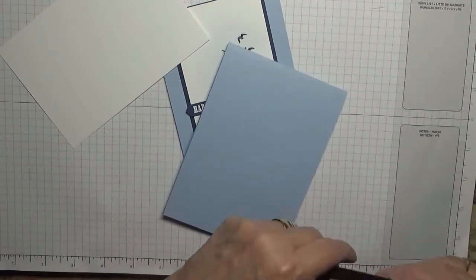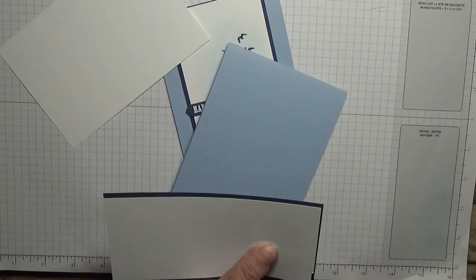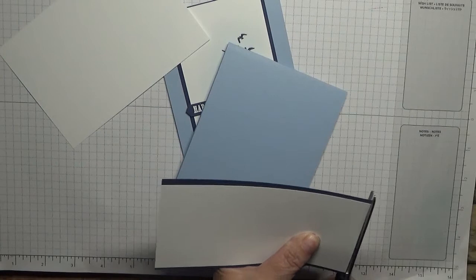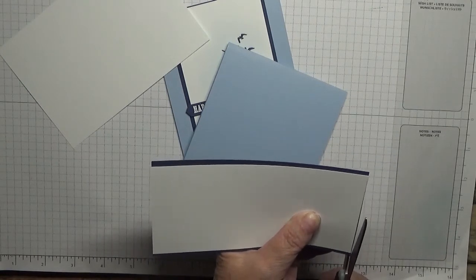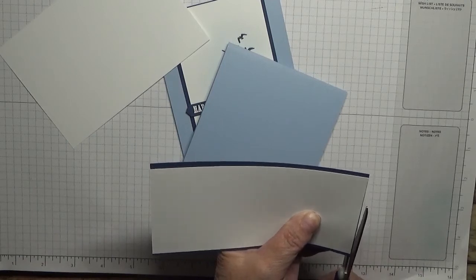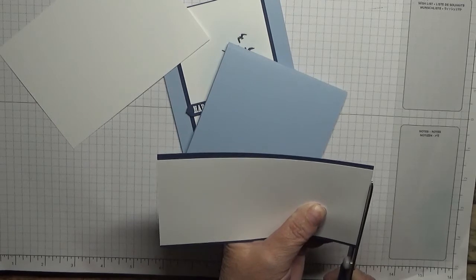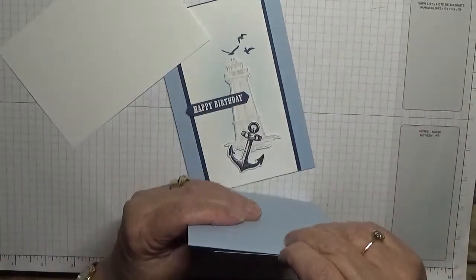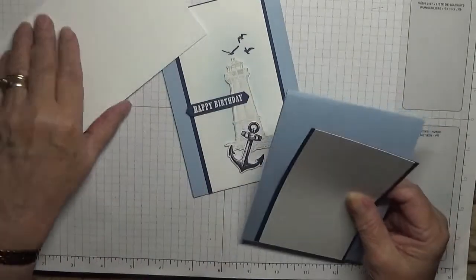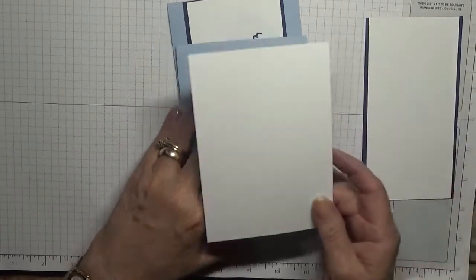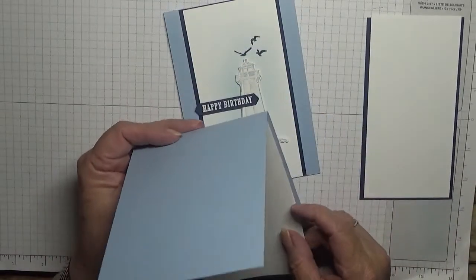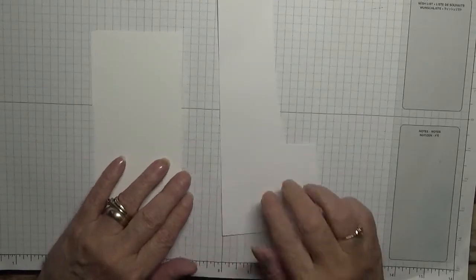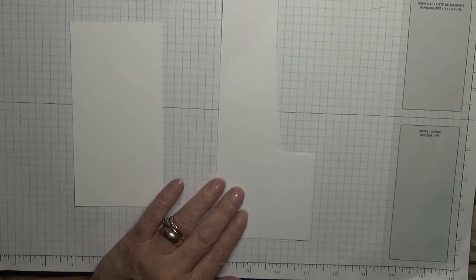That blue does need trimming. And a piece of white for the inside - that is 5 and 5/8 by 3 and 7/8. So let's get started. We need this, and we also need scraps for the lighthouse and the anchor.